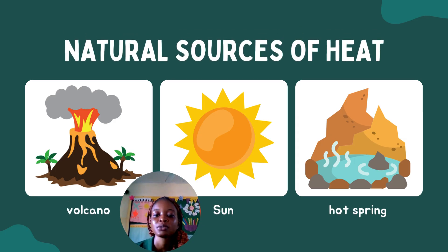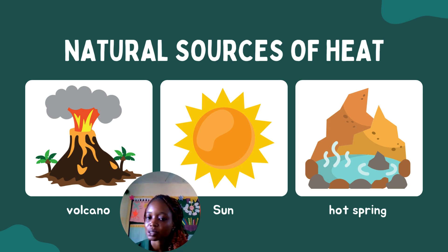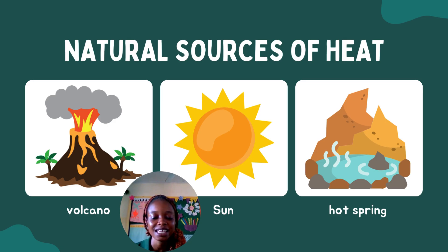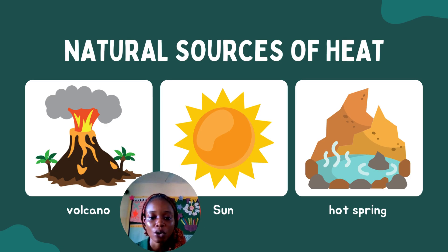Now let's look at sources of heat, starting with natural sources. We have things that occur naturally in nature that produce heat. First of all, the sun — the sun is one major source. When you stand in the sun you can feel the heat that comes directly from it and how hot your body gets. We also have hot springs, volcanoes, and many more.